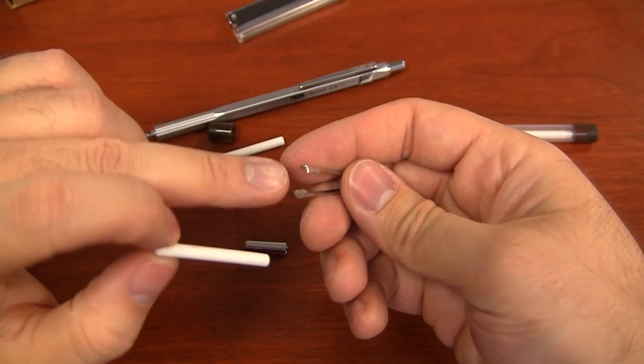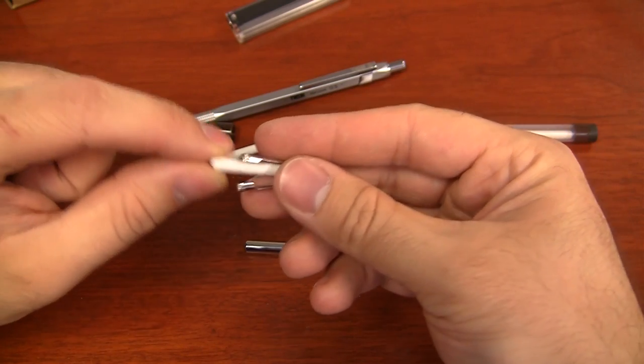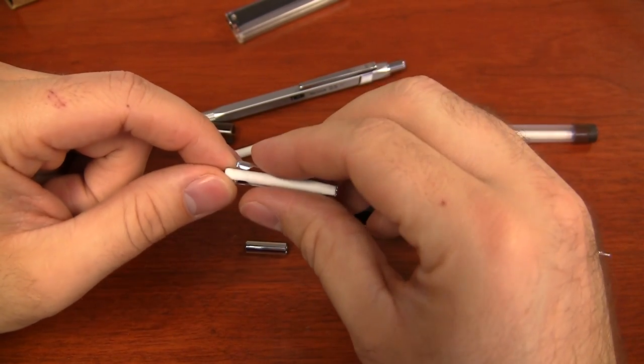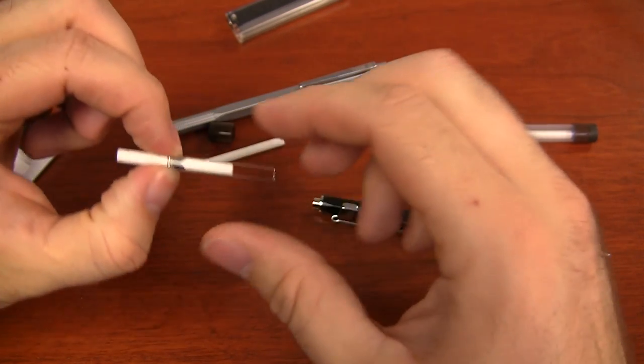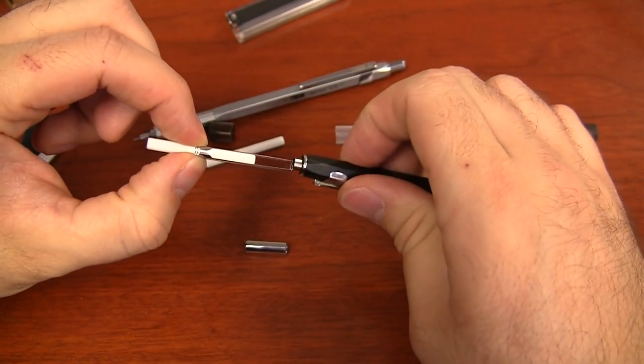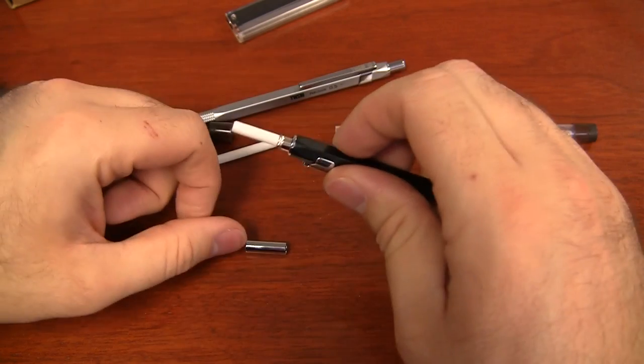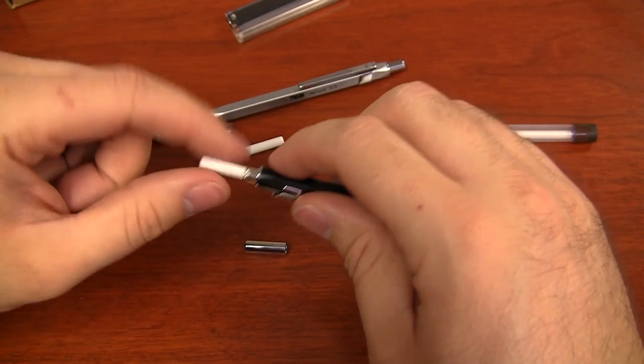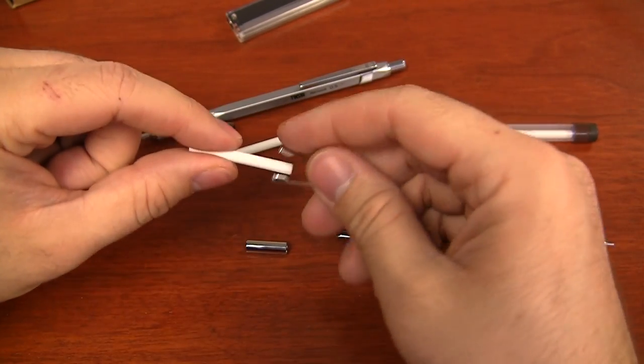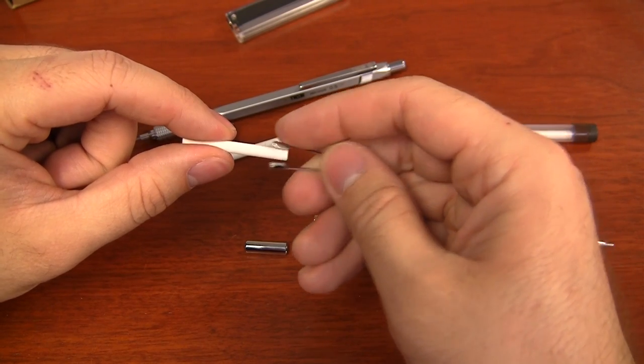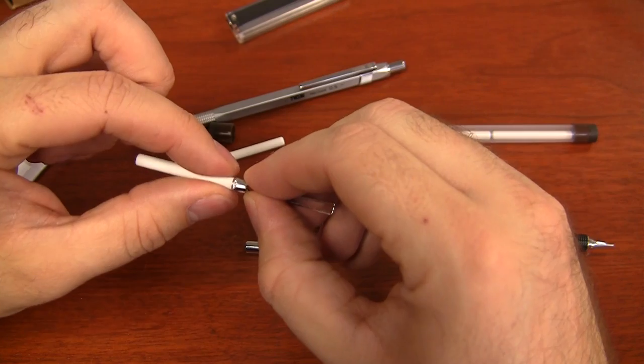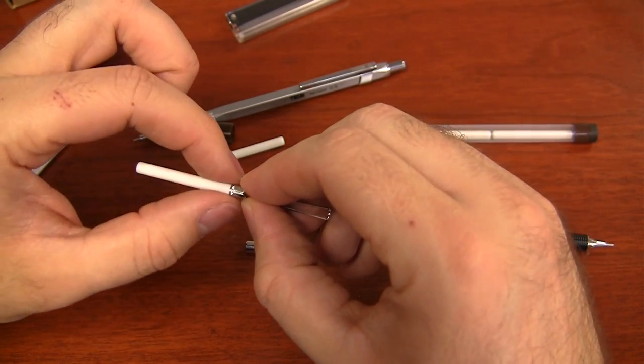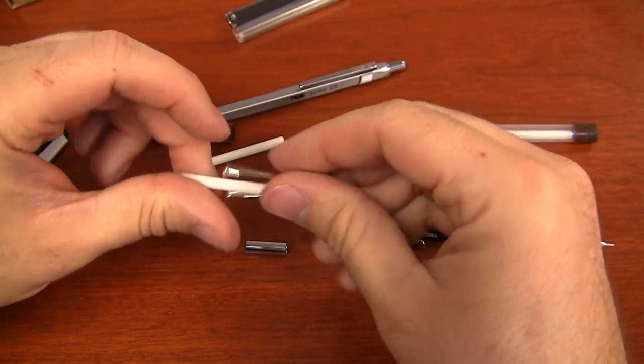And the idea is that it kind of grabs the eraser up at the top here. So that as you use it, you just kind of pull it out further and further and it will hold it in place with friction so that it allows you to use the eraser pretty much to the end. And I imagine this last few millimeters or so would be needed to kind of hold the thing in place. So you're not going to be able to use all of the eraser, but you get to use most of it.